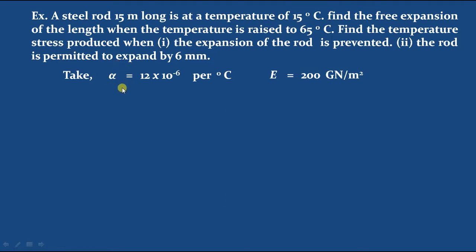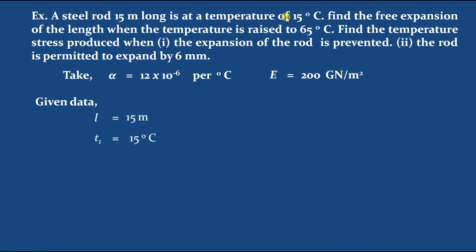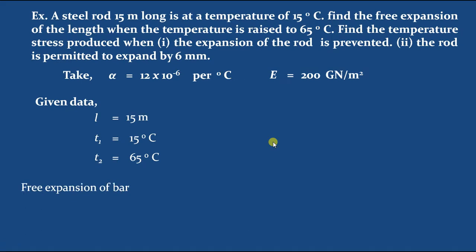For reference, alpha for the steel rod — the coefficient of expansion — is given as 12 into 10 power minus 6 per degree centigrade. The Young's modulus of steel is 200 giga Newton per meter square. Writing the given data: length of rod L = 15 meters, T1 = 15 degrees centigrade (initial temperature), T2 = 65 degrees centigrade (final temperature). Now we find the free expansion.